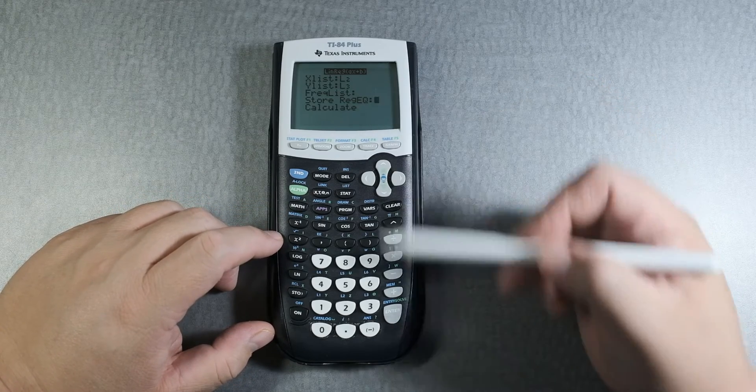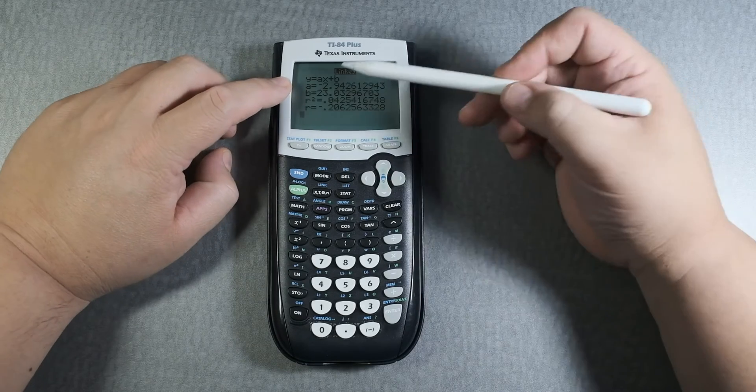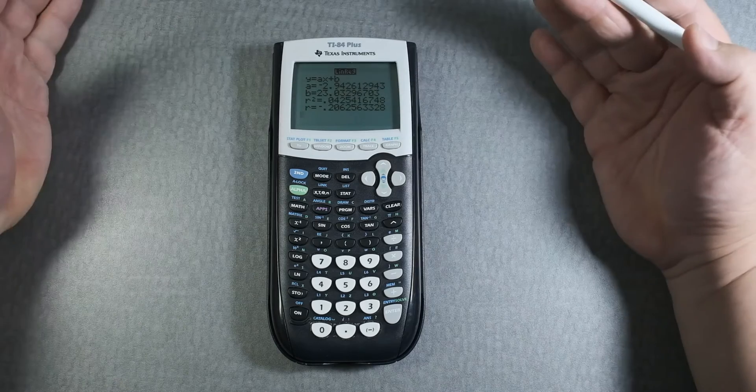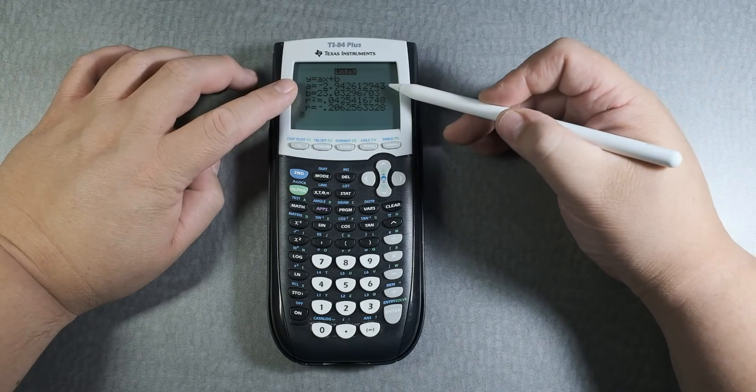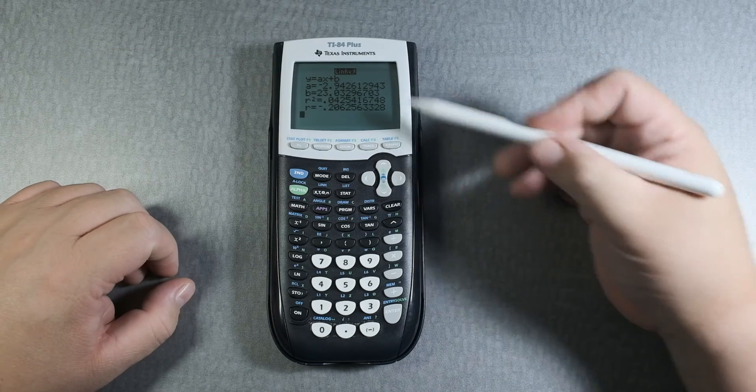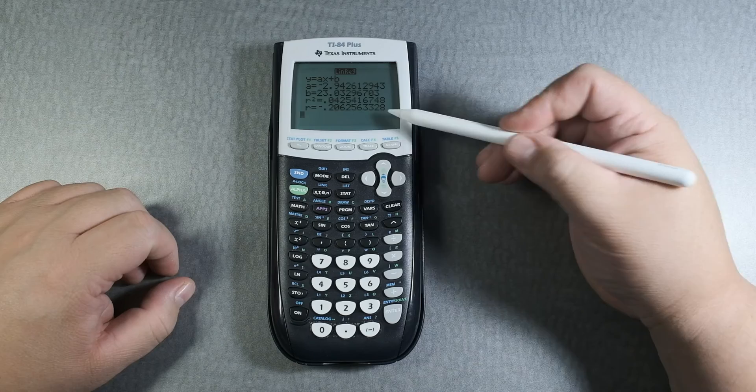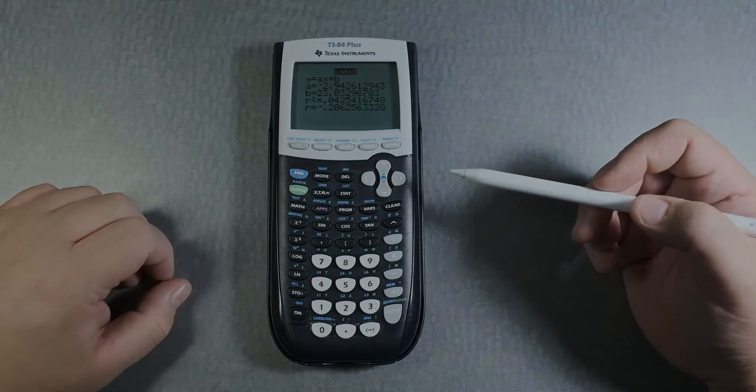These are blank. Calculate, enter, and there it is. It tells you the form, ax plus b, where a is the slope—that's negative 2.94—and b is the y-intercept. It also gives you the correlation coefficient and correlation of determination, which is r-squared.